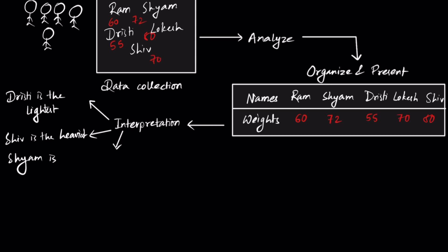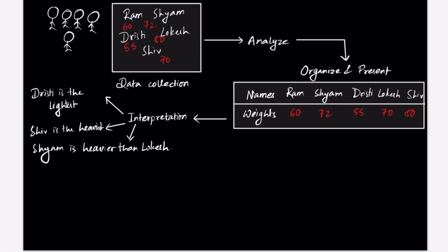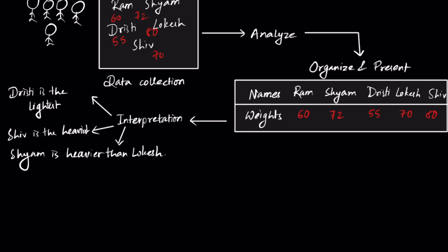These interpretations make some sense as compared to the initial data that we had collected right here; they don't necessarily make any sense. So these interpretations that actually make sense are what we call information.